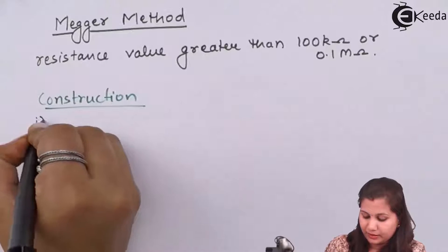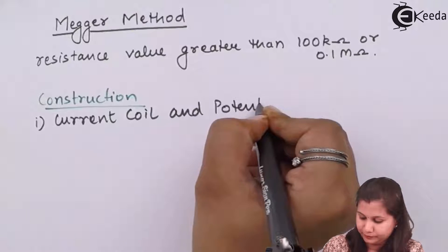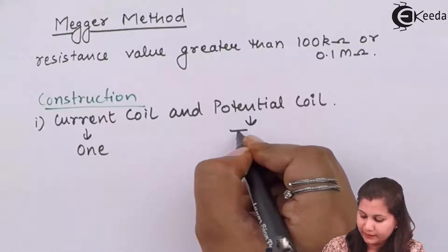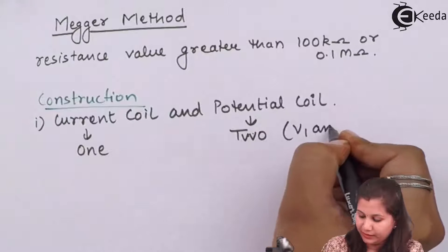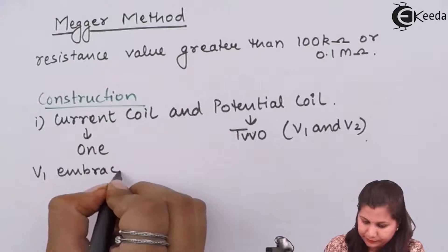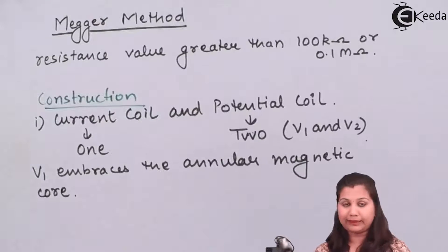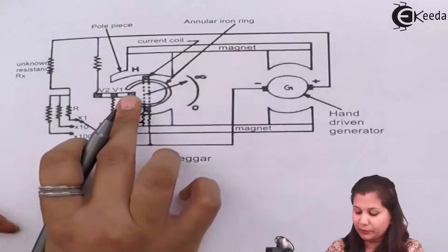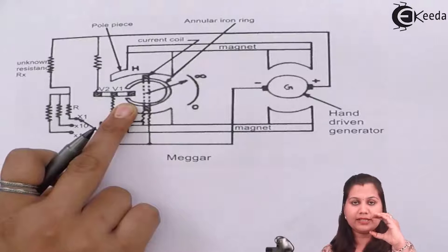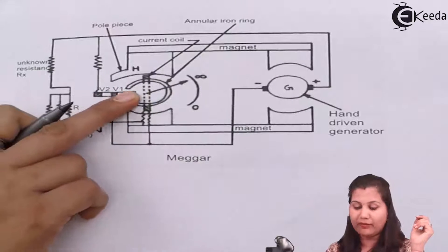The first component is the current coil and the potential coil. The two potential coils are V1 and V2. This V1 potential coil embraces the annular magnetic core. You can see that V1 is inside the annular iron ring. This annular iron ring is C-shaped, and in between this ring we have the V1 potential coil.